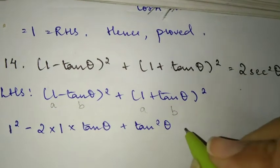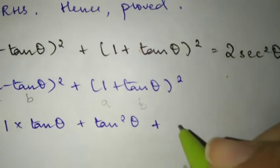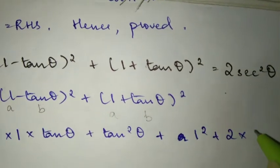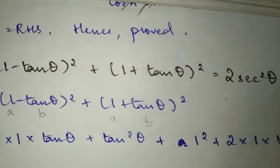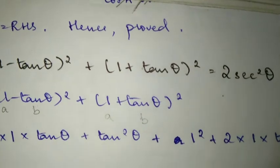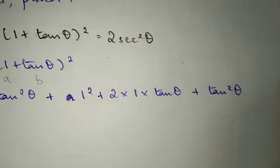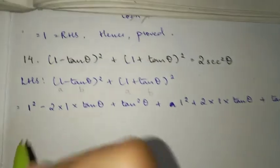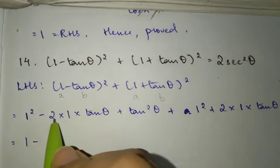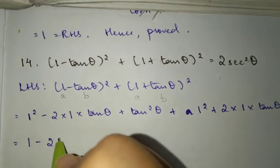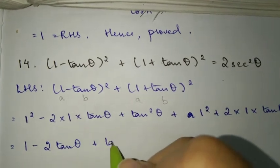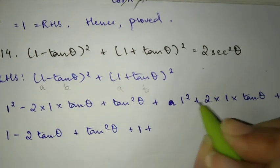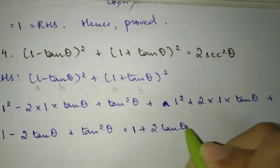Similarly, expanding (a plus b) whole square gives a square plus 2ab plus b square, which is 1 square plus 2 into 1 into tan theta plus tan square theta. So we get: 1 minus 2 tan theta plus tan square theta, plus 1 plus 2 tan theta plus tan square theta.